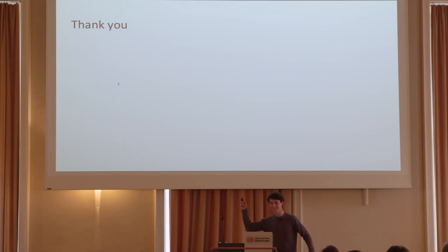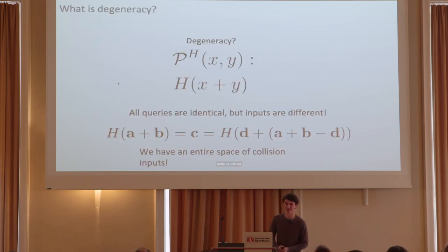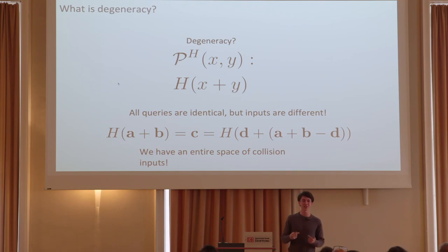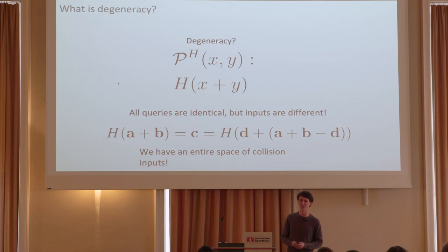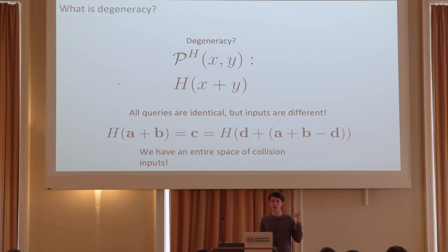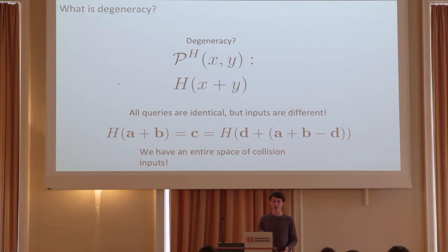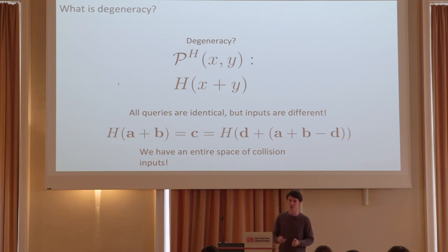Question: how do you deal with degenerate programs? Degenerate programs are a special class of programs where the rule that different inputs with the same output implies differing internal state breaks down. These programs are so simply structured that they fall outside the scope of the collision structure result. For example, consider an oracle query on x with a linear combination with y — this actually gives an entire space of collision inputs, where anything that sums to the same value is a valid collision input to that oracle query.